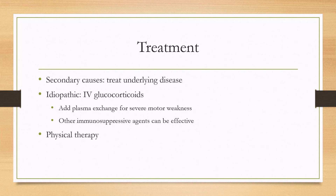In terms of treatment, for secondary causes you'll want to treat the underlying disease — for example, for compressive myelopathy that would be spine surgery. For idiopathic transverse myelitis, the treatment is IV steroids, and if there's severe motor weakness you can add plasma exchange. Other immunosuppressive agents have also been found to be effective, and physical therapy can be useful for people with severe motor weakness.